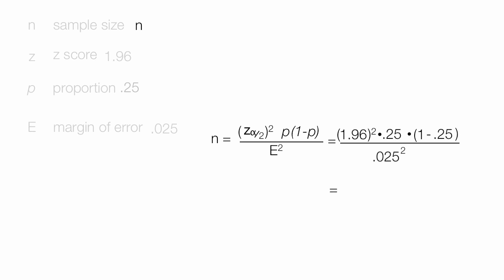Now 1.96 squared is equal to 3.84 times 0.25 times 1 minus 0.25, which is 0.75, divided by 0.025 squared, don't forget to square that, which is equal to 0.000625. When I multiply out the numerator, it equals 0.7203, divided by 0.000625.